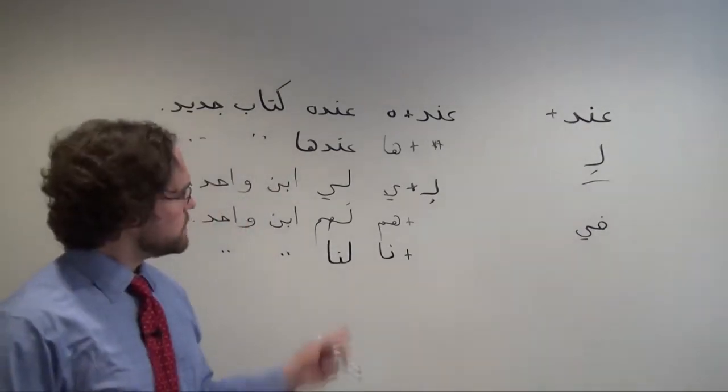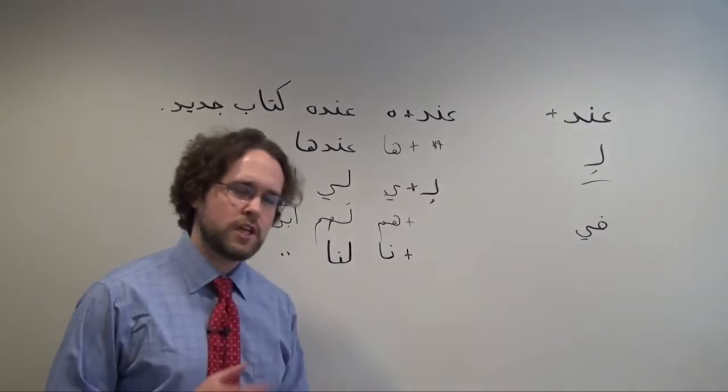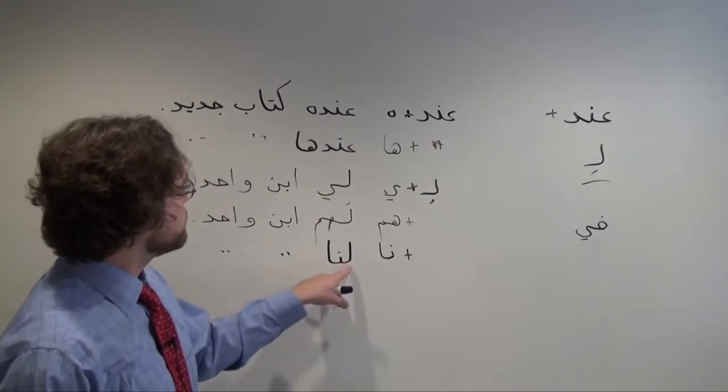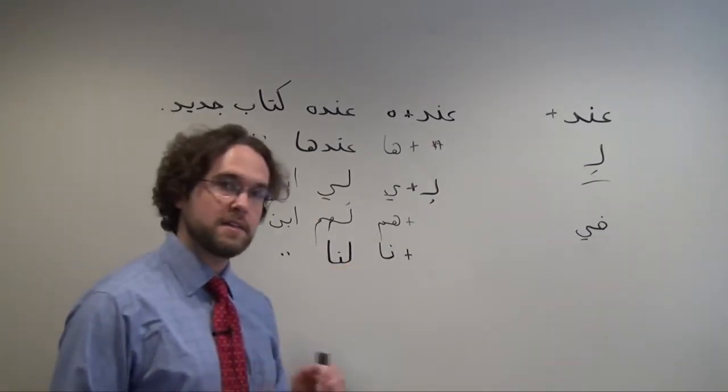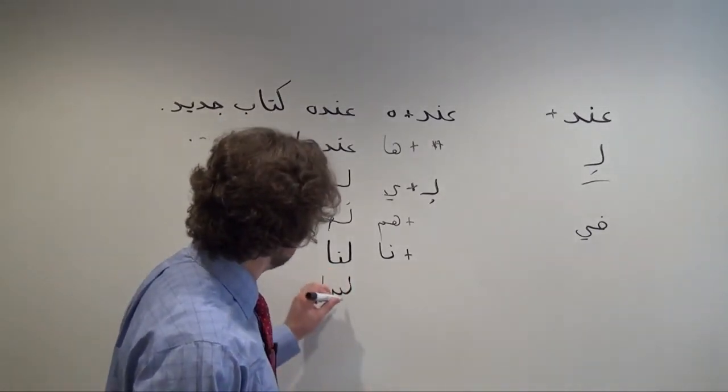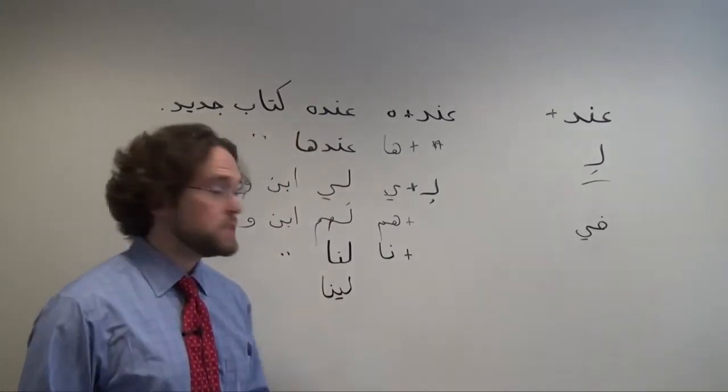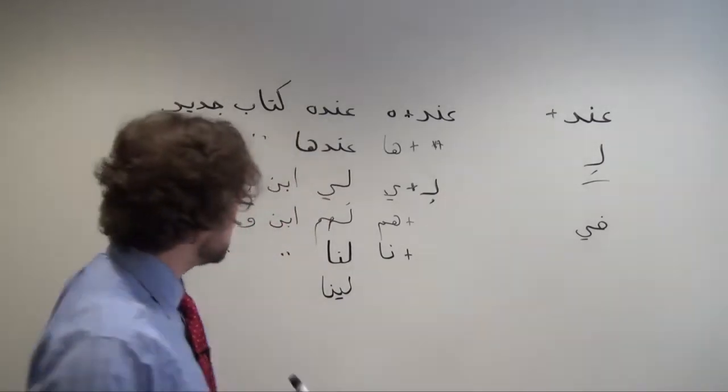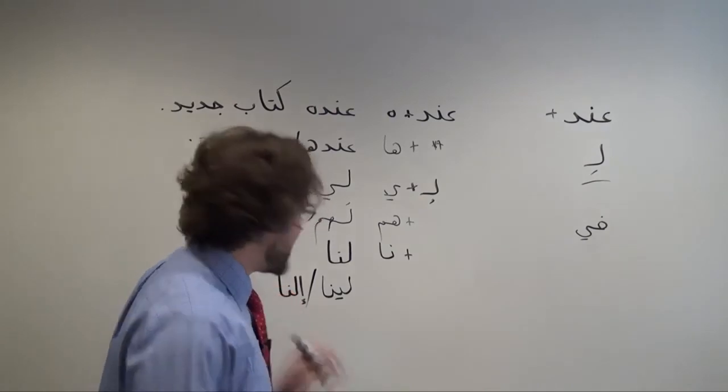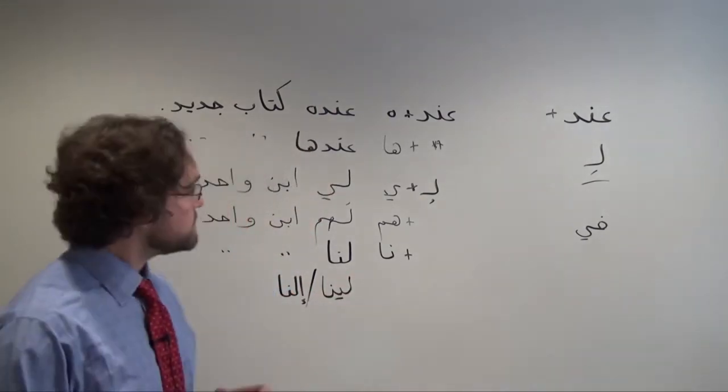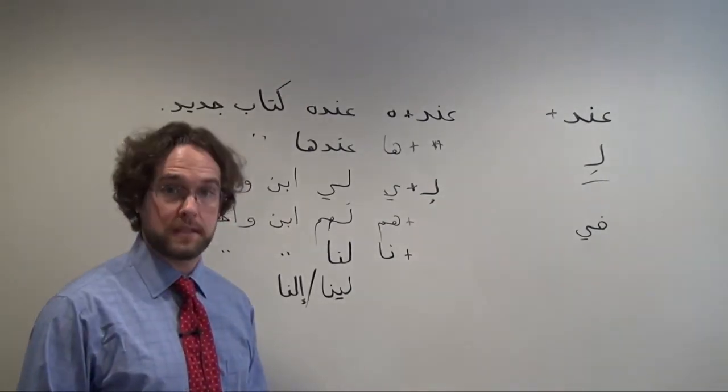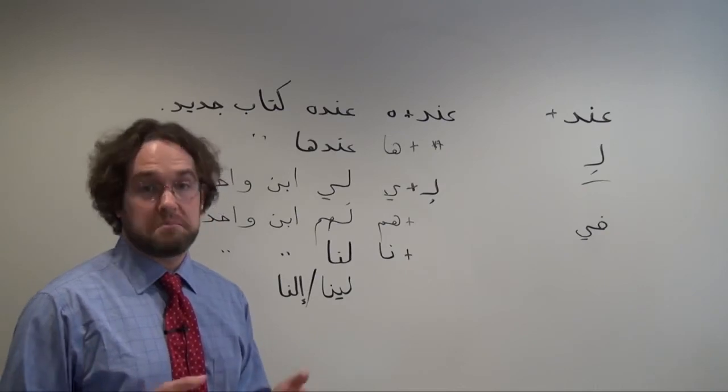The pronunciation of this possessor can change a little bit in dialect. For example, in Egyptian we tend to put some stress on the first syllable and add kind of an EE sound, so it would sound more like لِينَا. And in شامي, in Levantine dialect, we would actually add a little glottal stop at the beginning, so it would sound more like إِلْنَا. But the way we're going to form these possessive constructions is essentially the same from dialect to dialect, right? We're using exactly the same technique, if you will.